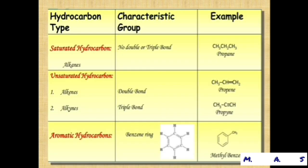Now, in the tabular column, we see three columns: hydrocarbon type, characteristic group, and example. Saturated hydrocarbons have the characteristic group: no double or triple bond. The example given is CH3-CH2-CH3, that is propane — only single bonds present.